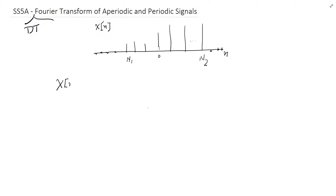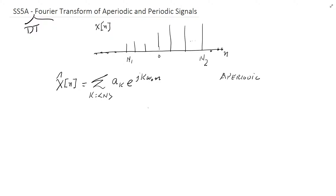I know my Fourier series equation, so maybe I can use that to approximate it. The Fourier series for discrete time says x(n) equals the summation over a period of a(k) e^(jkω₀n). The only issue is this is not periodic — it's an aperiodic signal. So what would you consider the period? Much like we did in continuous time, we're going to assume n equals n2 minus n1 as the period.